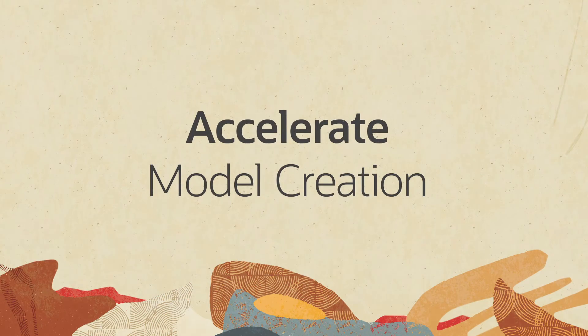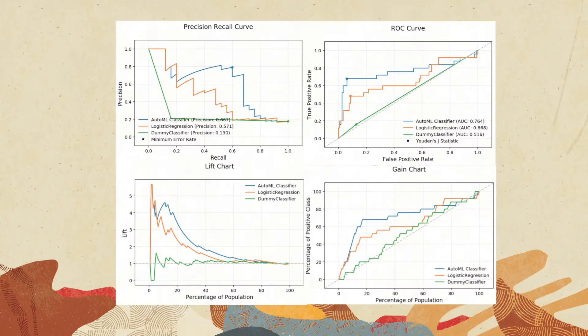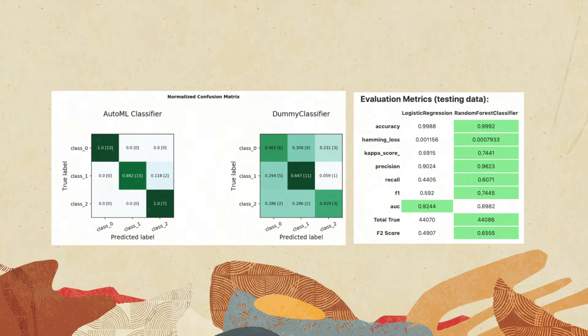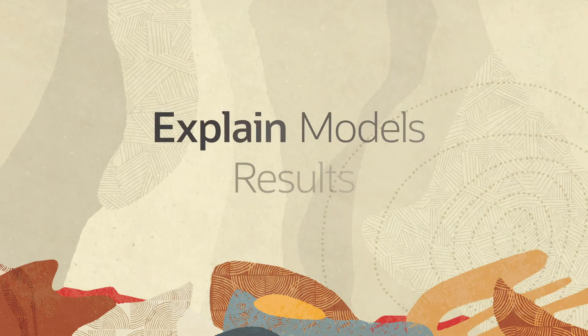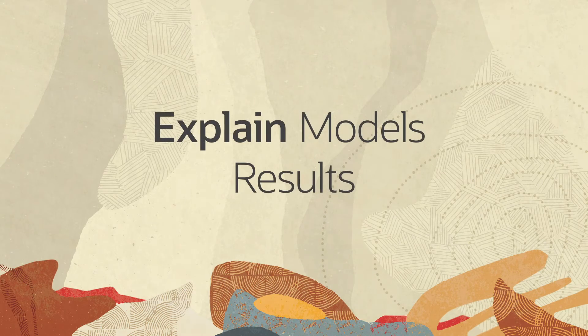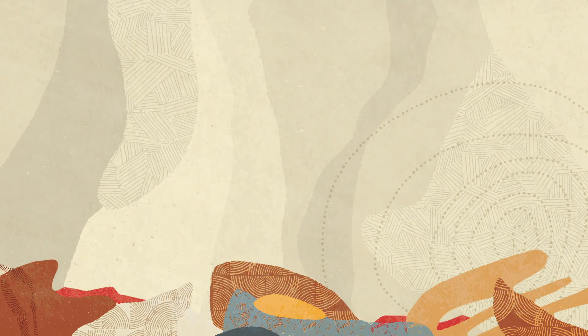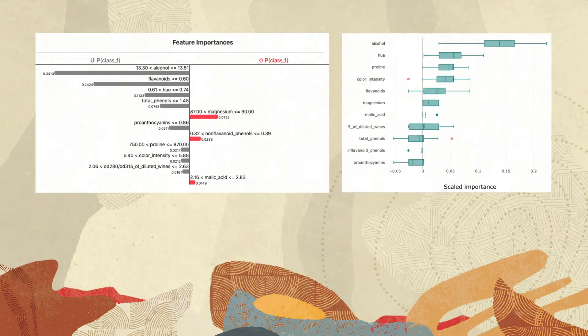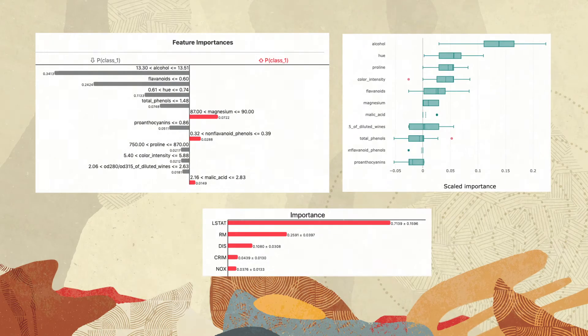AutoML selects the right algorithm, tunes hyperparameters, and evaluates model performance. Using global and local explainers, quickly understand which model features drive results.